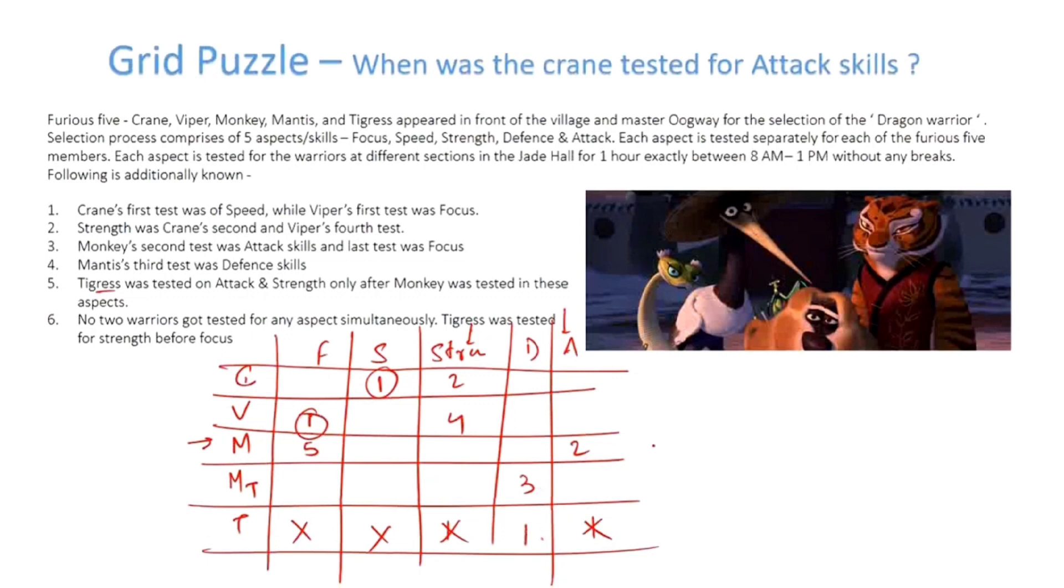Now we have 1 and 3 here. 2 and 5 are there in this row and 1 and 3 in this column, so this must be 4. Now we have 1, 3, and 4, so we have 2 and 5 remaining.